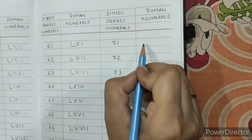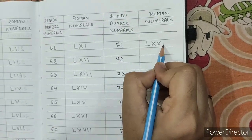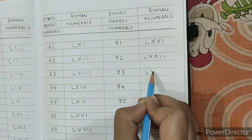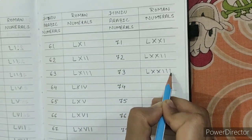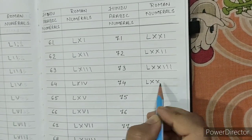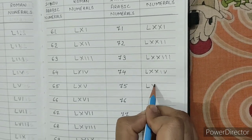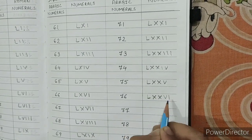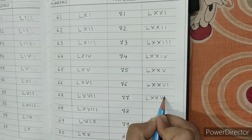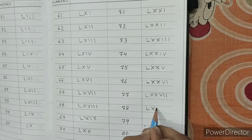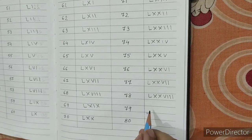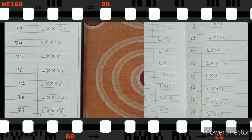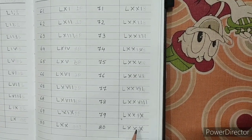For 71 to 80: 70 is LXX, so 71 is LXXI, 72 is LXXII, 73 is LXXIII, 74 is LXXIV, 75 is LXXV, 76 is LXXVI, 77 is LXXVII, 78 is LXXVIII, 79 is LXXIX, and 80 is LXXX.